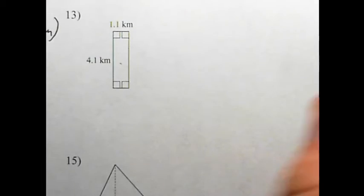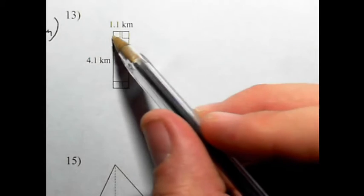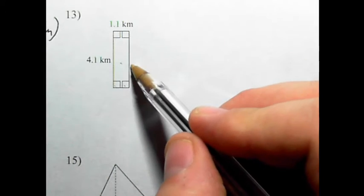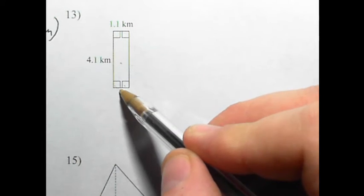Technically, this is a parallelogram too, but we know this as a rectangle. I have four 90 degree angles, so that's a rectangle or a square. Because this side is not congruent to this side, then it's a rectangle.